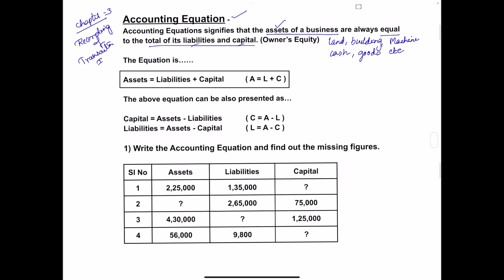Liabilities are the debts of a business. When a business owner starts a business, they may take loans and advances from the bank, or purchase goods or machines on credit. All these loans, advances, and credit purchases are called liabilities of the business.